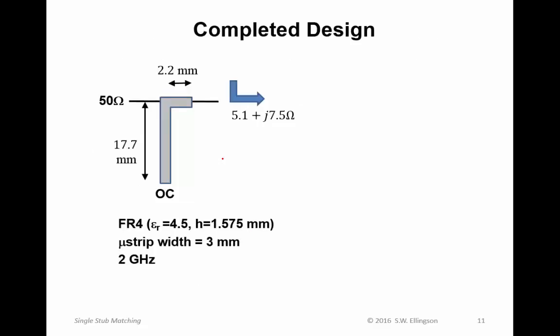Here is the completed design. 50 ohms on this side. 5.1 plus j7.5 ohms looking in the indicated direction. This line length is 17.7 millimeters. This line length is 2.2 millimeters. This is on FR4. It has a relative permittivity of 4.5 and an H height of 1.575 millimeters. Microstrip width is 3 millimeters. You should know this from a previous lecture where we worked out the required width in FR4 to achieve a specified characteristic impedance. So 3 millimeters in FR4 gives us about 50 ohms. All this has been worked out for 2 gigahertz.